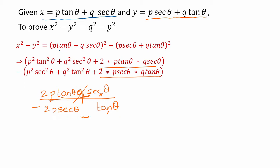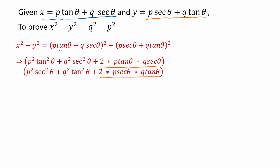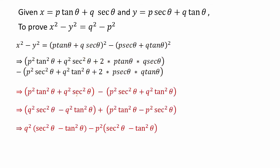After cancellation, only the remaining terms are left. We collect the q² terms and the p² terms. The q² terms give us q²·sec²θ minus q²·tan²θ, and the p² terms give us p²·tan²θ minus p²·sec²θ.